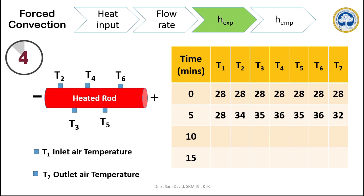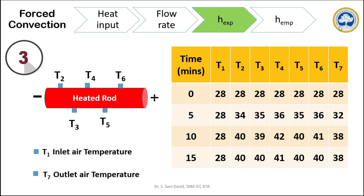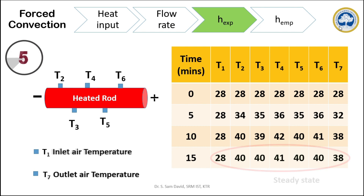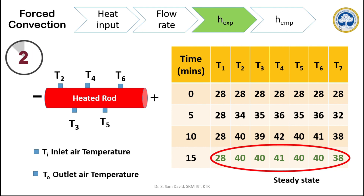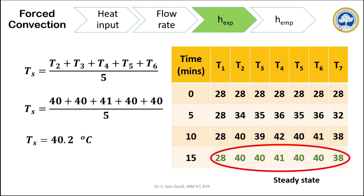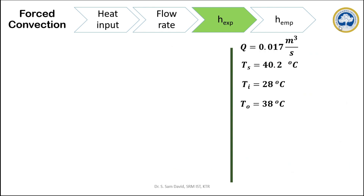We can see that the inlet air temperature remains the same, the outlet is slightly increasing, and T2 to T6 are increasing. After 10 minutes the readings are still rising compared to the 5th minute. At the 15th minute, thermocouple readings T2, T3, T4, T5, and T6 are almost the same as the 10th minute readings. There is no significant temperature rise from the 10th to the 15th minute, so we can assume the system has attained steady state. T1 and T7 are the inlet and outlet temperatures. We take the average of T2 through T6 as the surface temperature of the heater rod. We have now obtained the volumetric flow rate, surface temperature of the rod, and inlet and outlet air temperatures.